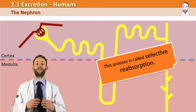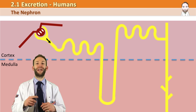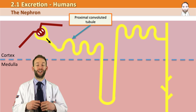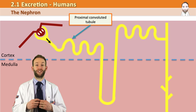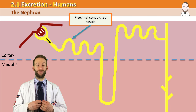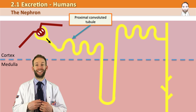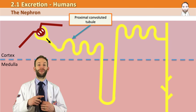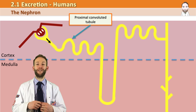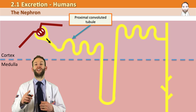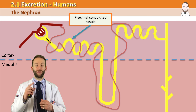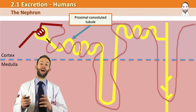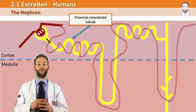The fluid moves along to the first wavy part of the nephron, called the proximal convoluted tubule. 85% of selective reabsorption happens here — all of the glucose gets reabsorbed, a lot of the amino acids, and a lot of the ions too. The efferent arteriole that left the glomerulus wiggles around the nephron so that the molecules can pass back into the blood where they're needed.